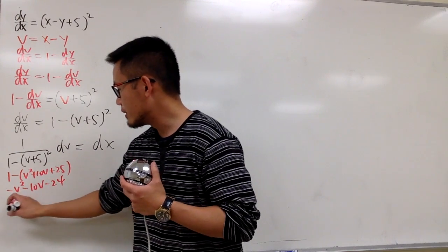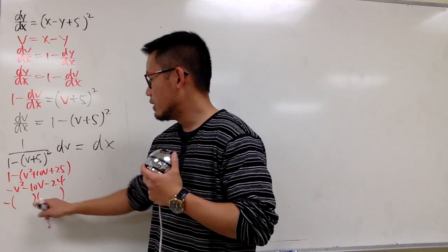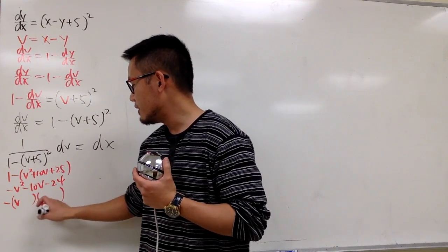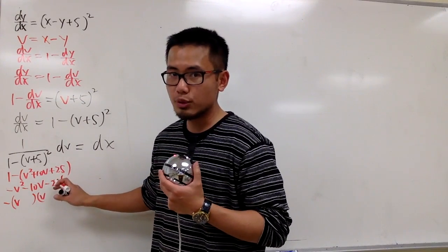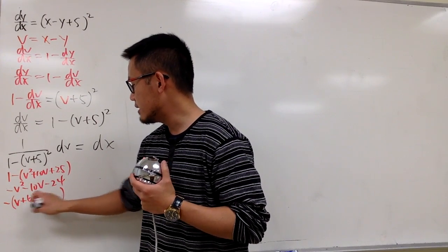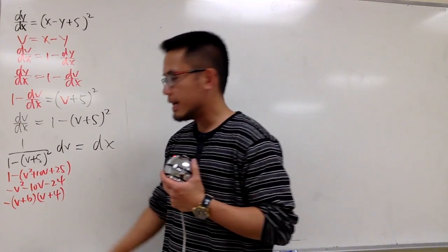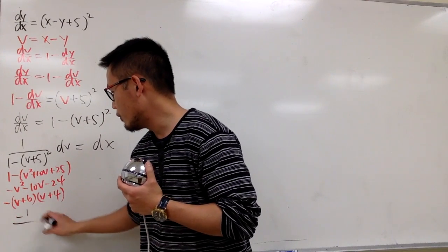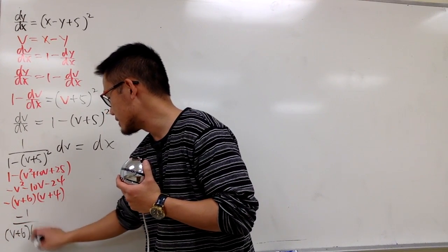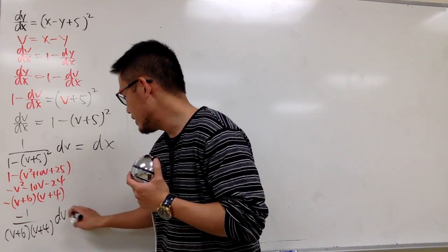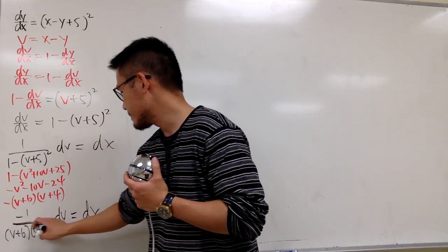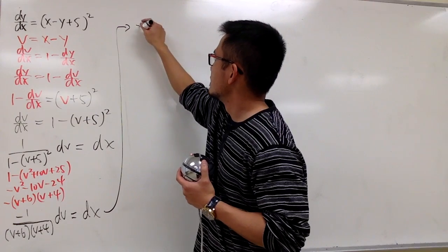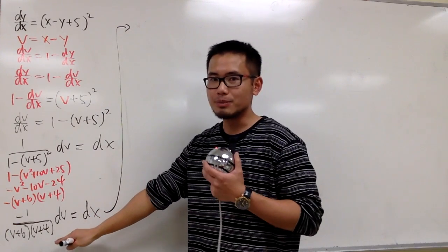Factoring out a negative from the denominator, everything inside becomes positive. We need factors of 24 that add to 10: that's 6 and 4. So the denominator factors as (v + 6)(v + 4), giving -1/[(v + 6)(v + 4)] dv = dx. We need partial fractions to integrate this.